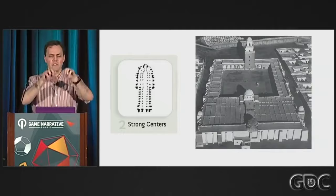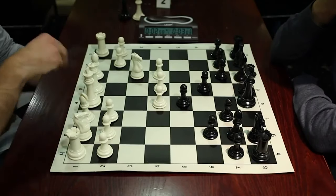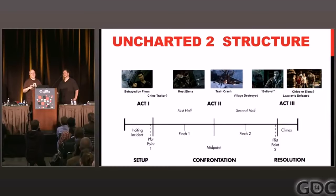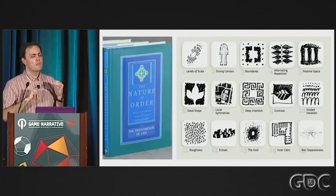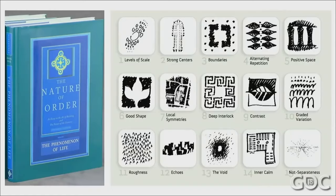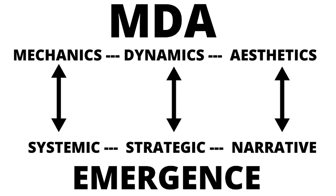Strong centers are about having a strong central theme, idea, or sense of orientation, seen with clarity in the opening of The Legend of Zelda: Breath of the Wild. Boundaries establish the beginning and end of an experience. Alternating repetition is expressed in a game's tension modulation. Positive space is about articulating space clearly. Good shape is about drawing objects with intent. Local symmetries can be seen in level design. Deep interlock is about integration. And contrast, roughness, echoes, non-separateness, and simplicity reflect a variety of aesthetic lenses we see in art, design, and animation.